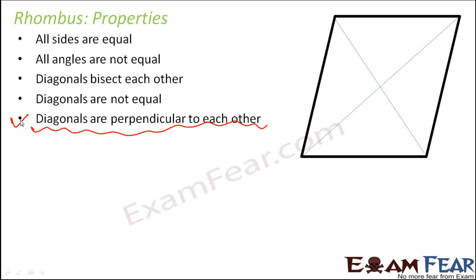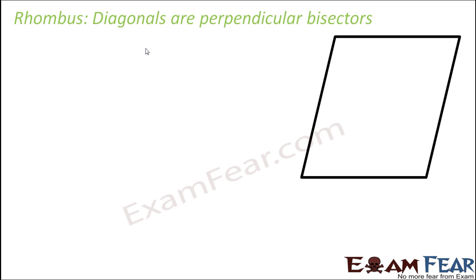Now this property is similar to square because here, like square, the rhombus also has all its sides equal. Therefore here diagonals are also perpendicular bisectors. However, we will prove how the diagonals in a rhombus are perpendicular bisectors.